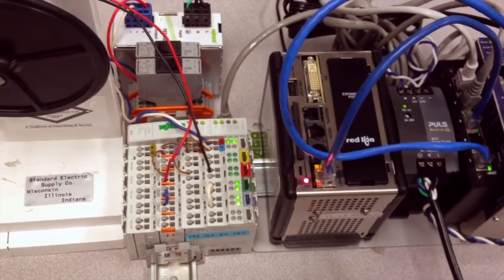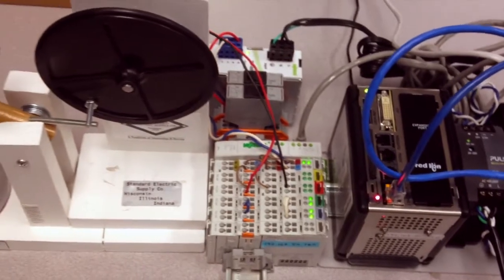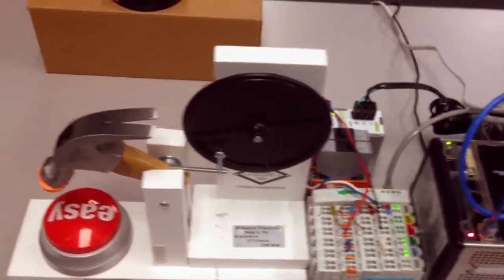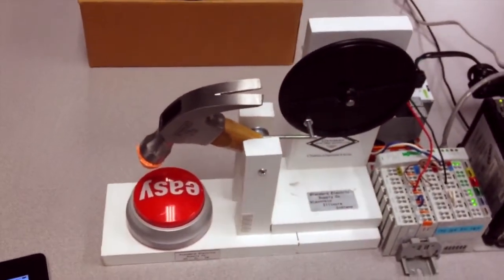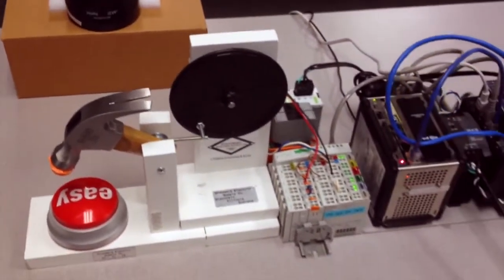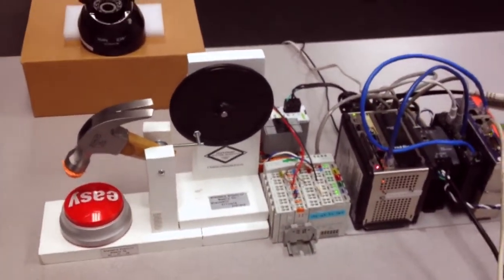I toggle a bit which then activates an output which turns this motor and drops the hammer on the easy button. Kind of like an electrical Rube Goldberg device.